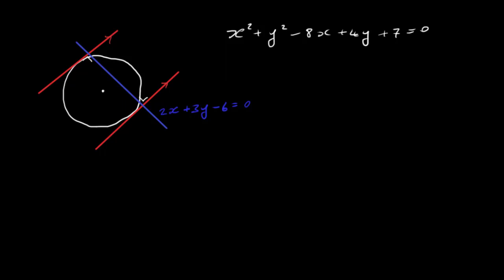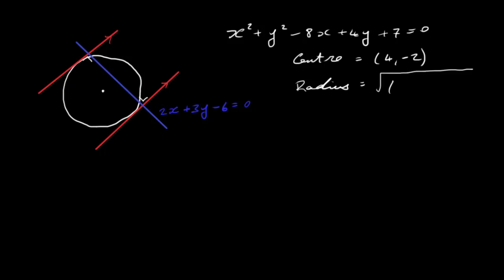Let's start by finding the center and radius of our circle. The center is (4, −2): half the coefficient of x with the sign changed, and half the coefficient of y with the sign changed. The radius is given by √(−g² + −f² − c), so that's √(−4² + 2² − 7) = √(16 + 4 − 7).